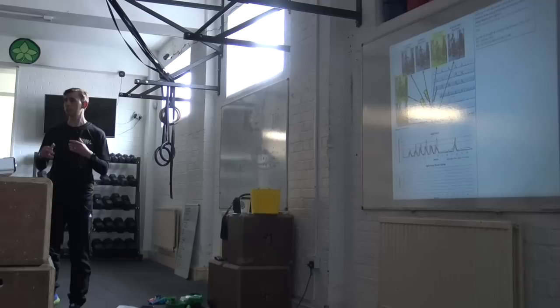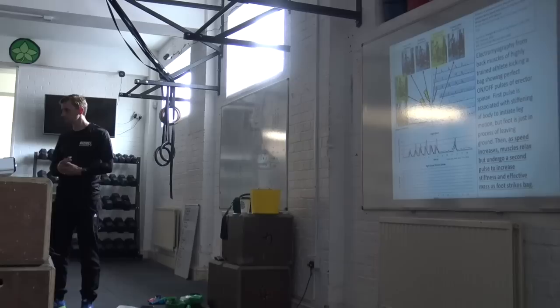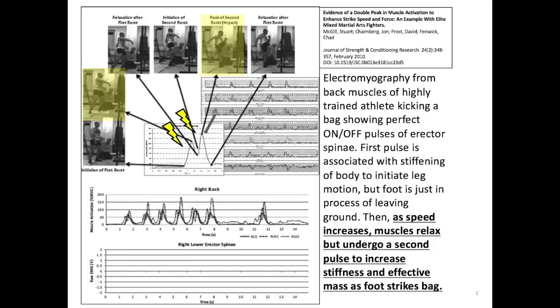You might just think you throw a punch and that's it. But combat athletes have a second pulse in muscle activity as well, which often people either don't know about or don't train. What they found is these on-off pulses of different muscles. The first pulse is the initiation of movement, then as speed increases the muscles relax, and then they undergo this second pulse which creates stiffness. That's another way in which you can create force, which is not generally well appreciated.